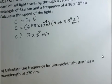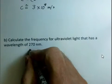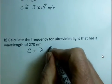Let's do another one that is more typical in how the calculation might be performed. We want to calculate the frequency where we're given ultraviolet light, again traveling in a vacuum, and the wavelength 270 nanometers. So again, speed of light equals wavelength times frequency.